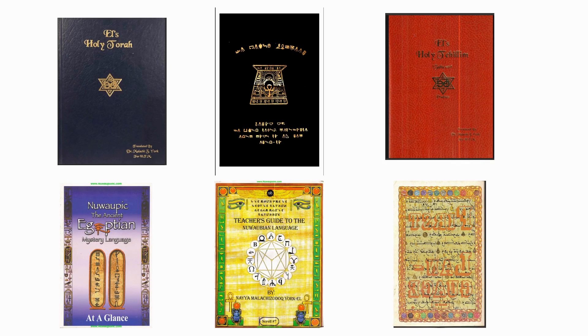We're at the end. These are the books y'all should read — this is how I'm getting the information and upgrading myself. You got 'El's Holy Torah,' 'El's Holy Tehillim,' the Holy Tablets, the Nuwabic Egyptian mystery language, the 'First Language' on the bottom right, and the Teacher's Guide. The Teacher's Guide is what the majority of us should be speaking. We need to learn these languages — because we can't do nothing great if we don't.